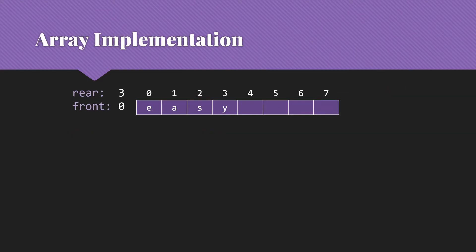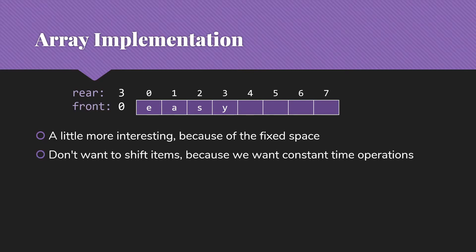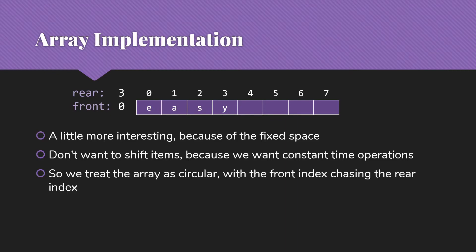Array implementation for queues is a little bit more interesting because our space is fixed. We don't want to shift items. We could imagine simply shifting items down in a logical representation of the queue, but we don't want to do that because we want constant time operations — having to move every single item in the queue down is a linear operation. So instead, we're going to treat the array as circular, with the front index chasing the rear index around the array. In an empty queue, we'll simply have both as minus one.